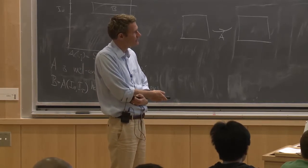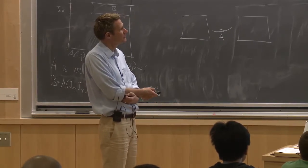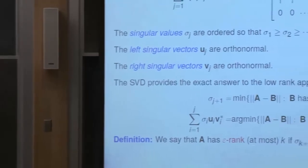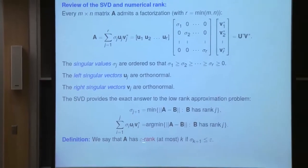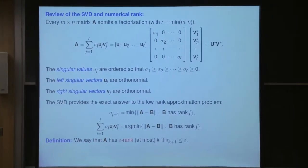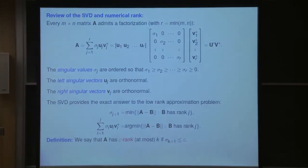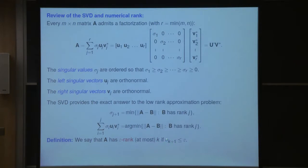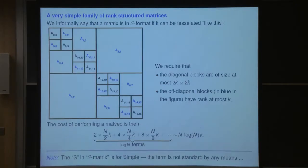Here again is the SVD — a reminder of the notation. U's are the left singular vectors, V's are the right singular vectors. We introduce the notion of epsilon rank: given a tolerance, how many singular values do you need to include to approximate the matrix to within tolerance epsilon in spectral norm? That determines the epsilon rank k.